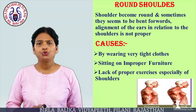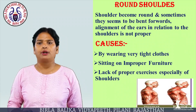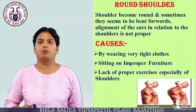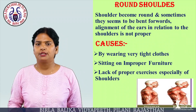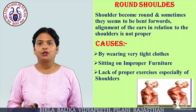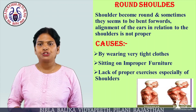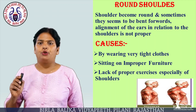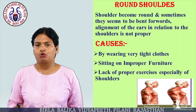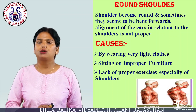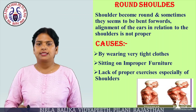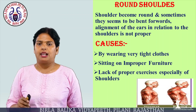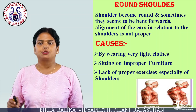Round Shoulders. In this deformity, shoulders become round and sometimes seem to be bent forward. The alignment of the ears in relation to the shoulders is not proper. Causes: wearing very tight clothes, sitting on improper furniture, and lack of proper exercises especially of shoulders.